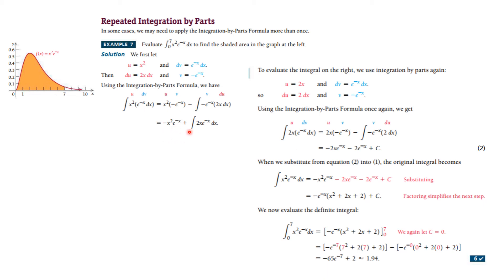For the second application, we let u equal 2x, so du is 2 dx, and dv is e^(−x) dx, giving v equal to −e^(−x). Applying the Integration by Parts formula again, this integral is now one we can compute. Pulling out −2 and completing the calculation, we get −2x e^(−x) minus 2e^(−x) plus c.